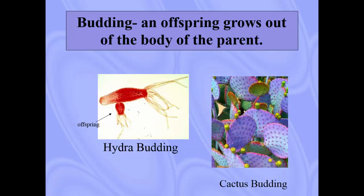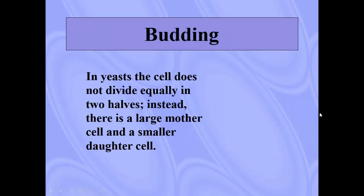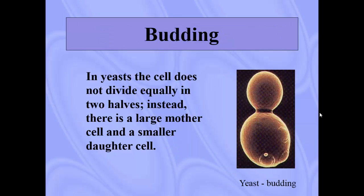Budding: an offspring grows out of the body of the parent. A hydra is a very simple organism, and you can see a mini hydra coming out of it — that's budding. Same with cacti; these are little buds of cacti, a plant reproducing asexually. Very cool stuff. Yeast also does this — yeast is the bacteria that allows bread to rise. The cell does not divide equally into two halves; instead there is a large mother cell and a smaller daughter cell.